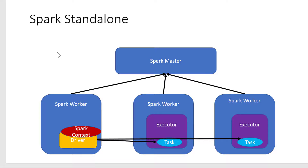The driver will have an object to coordinate all the workers — that particular object is called Spark Context, which is very specific to the Spark application. The driver will decide how many worker tasks are required, and that many worker tasks will get started in various worker machines within the executor. This coordination will be done by the master, and the master will coordinate with the driver in terms of which worker machine is free and who can take up the next work.